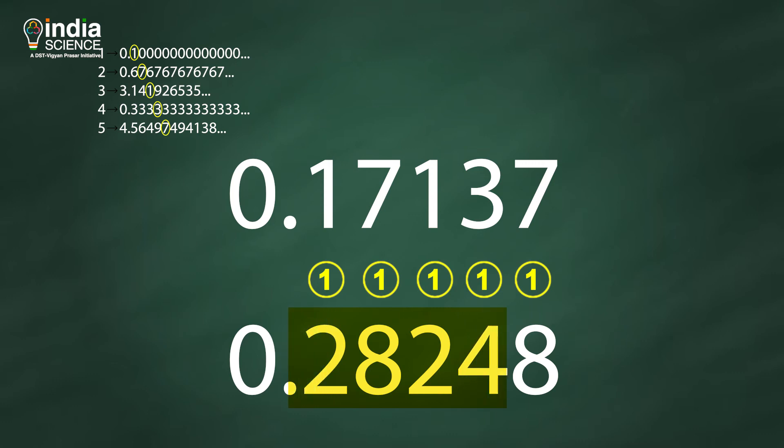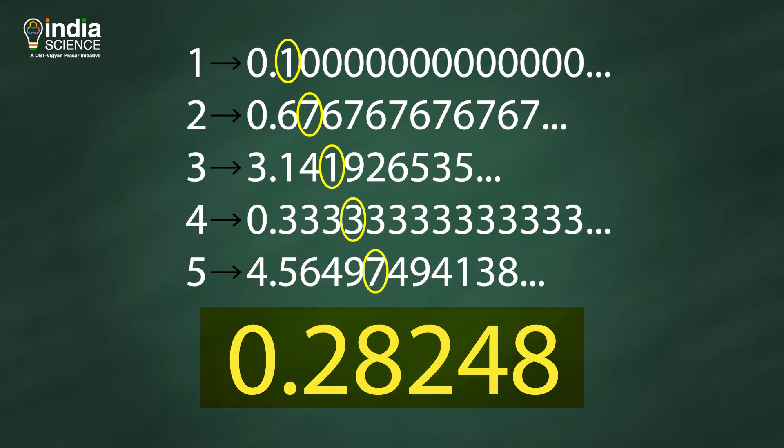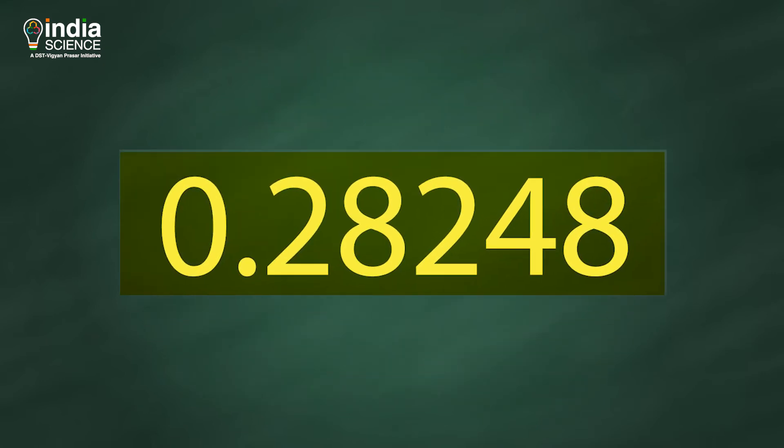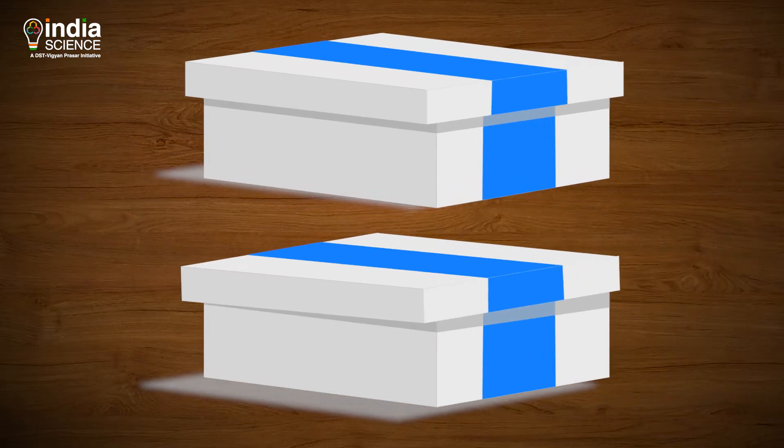This new diagonal number is definitely a real number, but it is different from all the numbers in the list. Hence, we have made a new real number that does not show up on our list. This shows that the real numbers are not listable infinite.